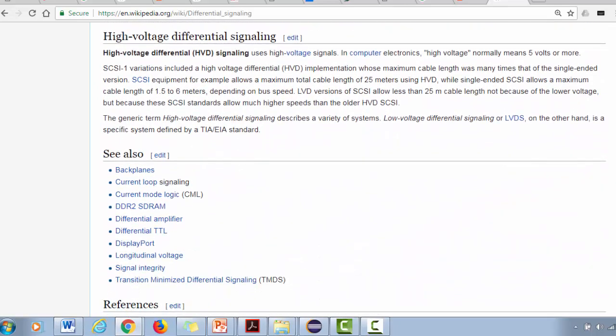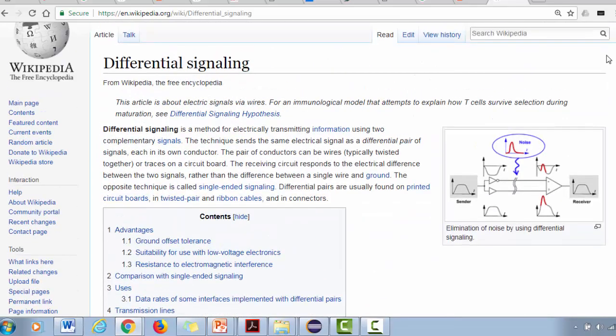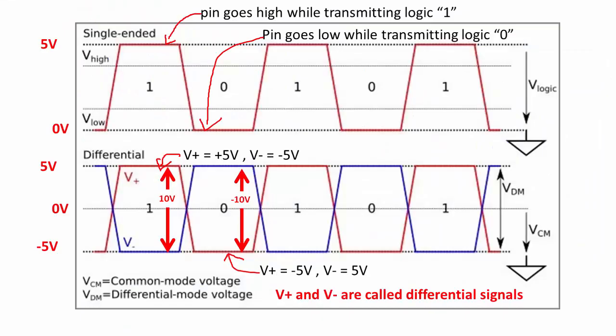In single-ended signal communication, logical zero means zero volts and logical one means 5 volts or 3.3 volts. But in differential signaling, logical zero means -10 volts and logical one means +10 volts.